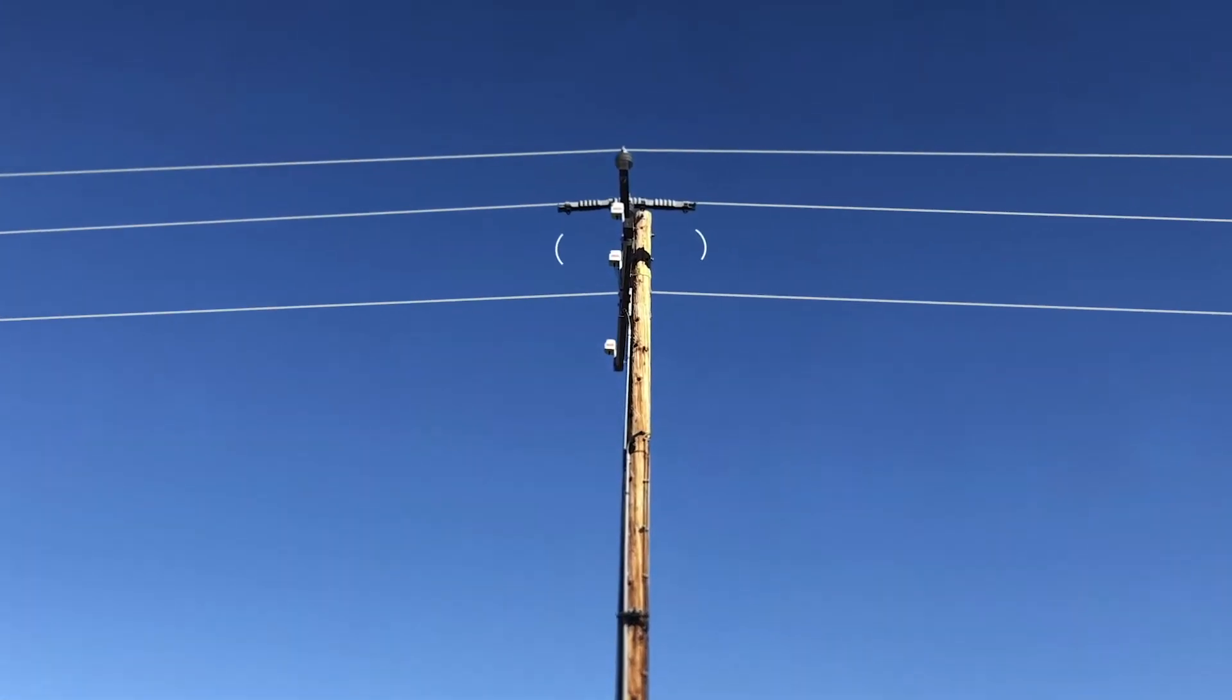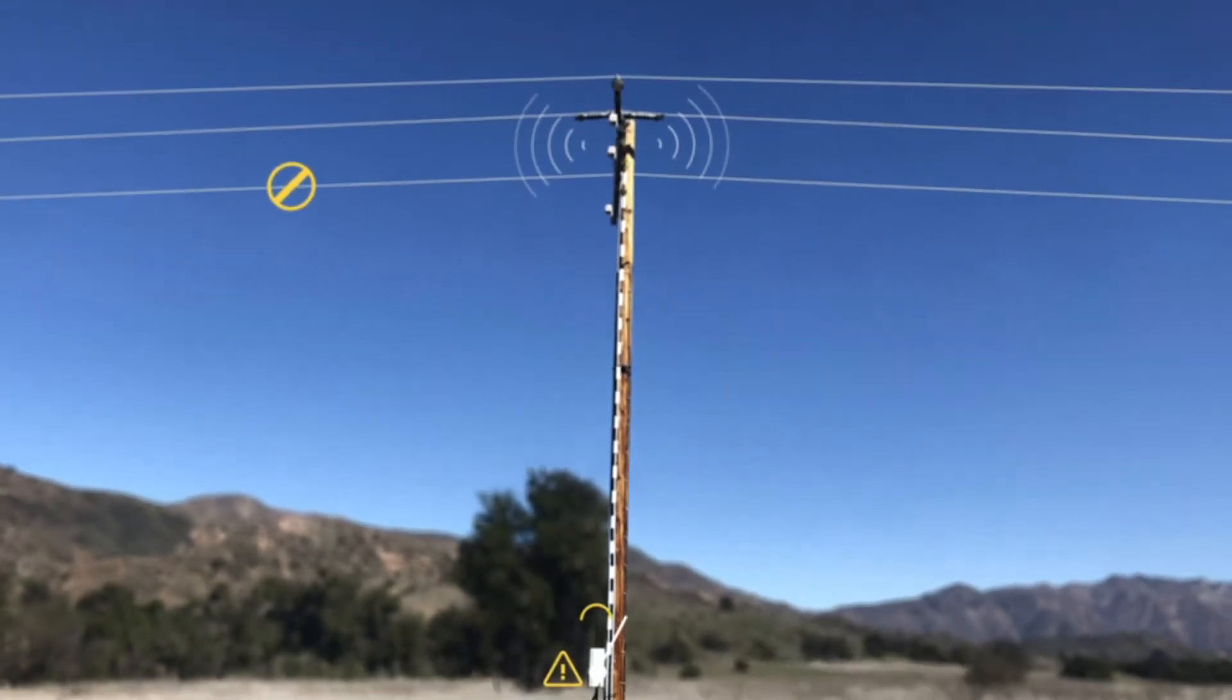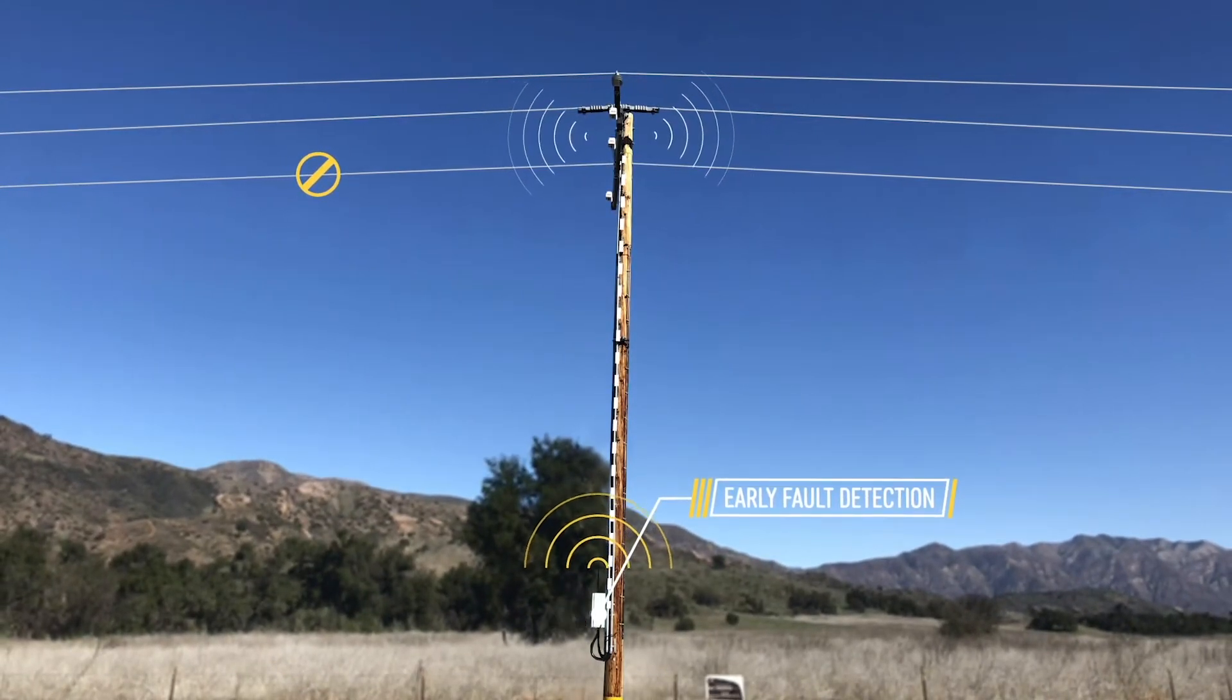It's listening for any type of abnormalities on the electrical system. When it identifies those, it alerts us both to what type of abnormality might be present and also where on the circuit it might be.